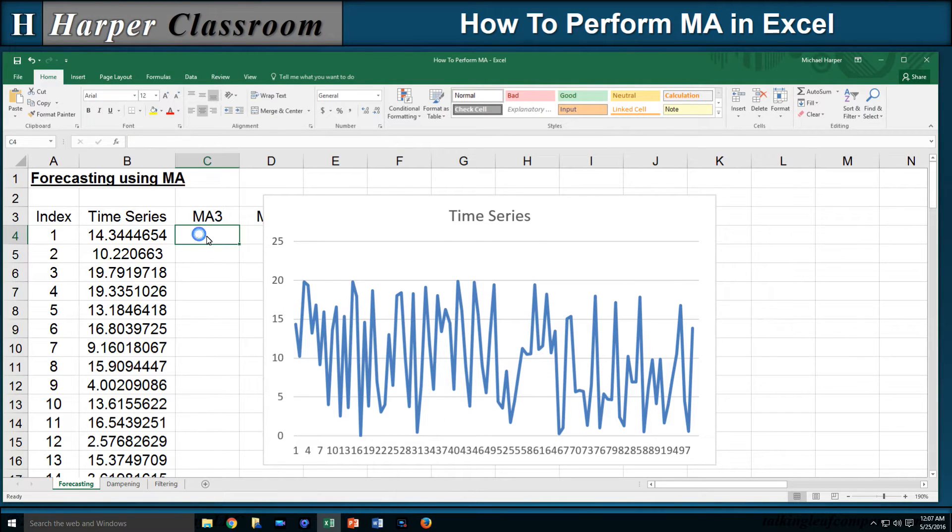Let's do a moving average with a window of 3. So I come down here in time period 4, equal average, and average the first 3 numbers.